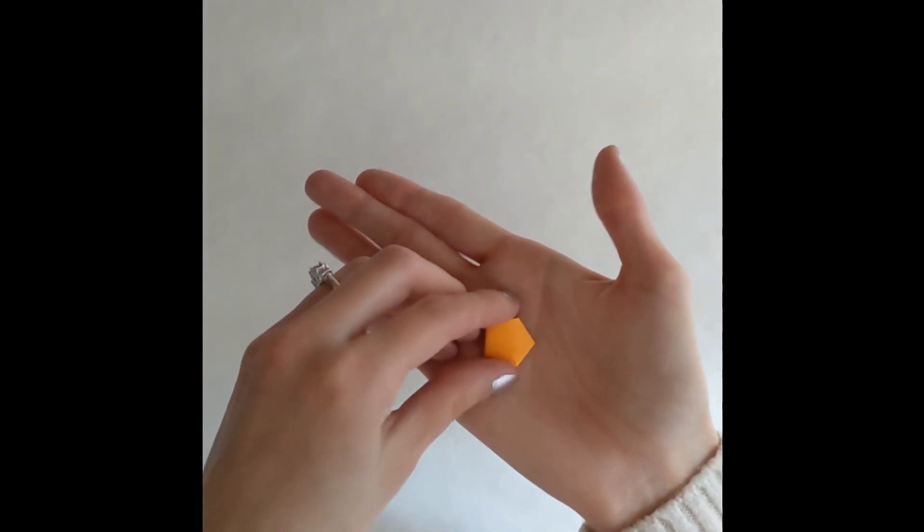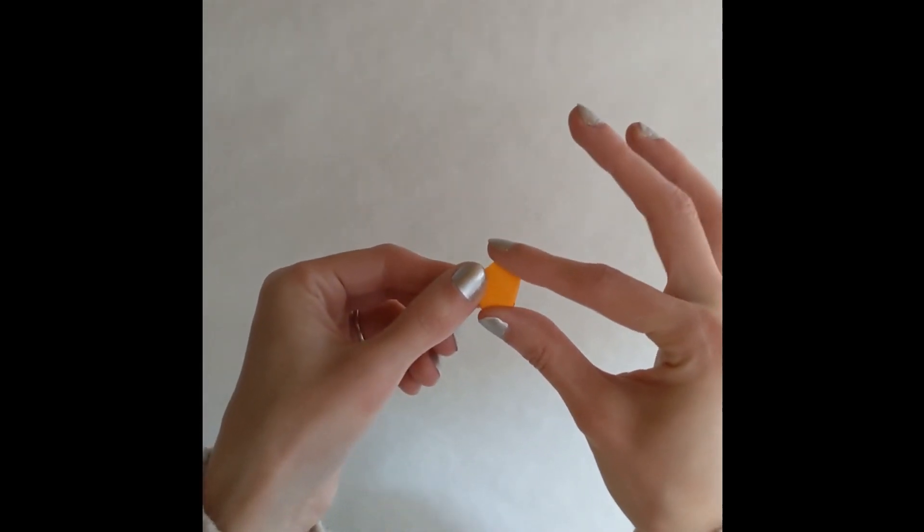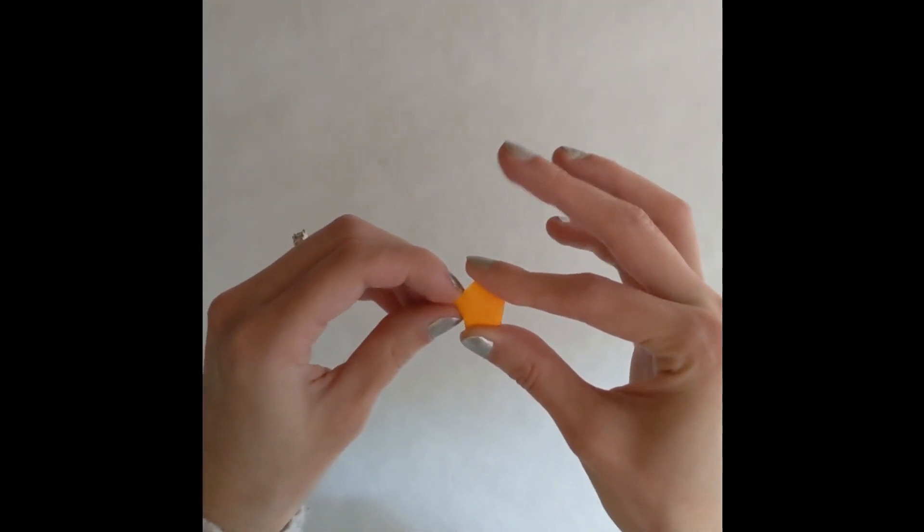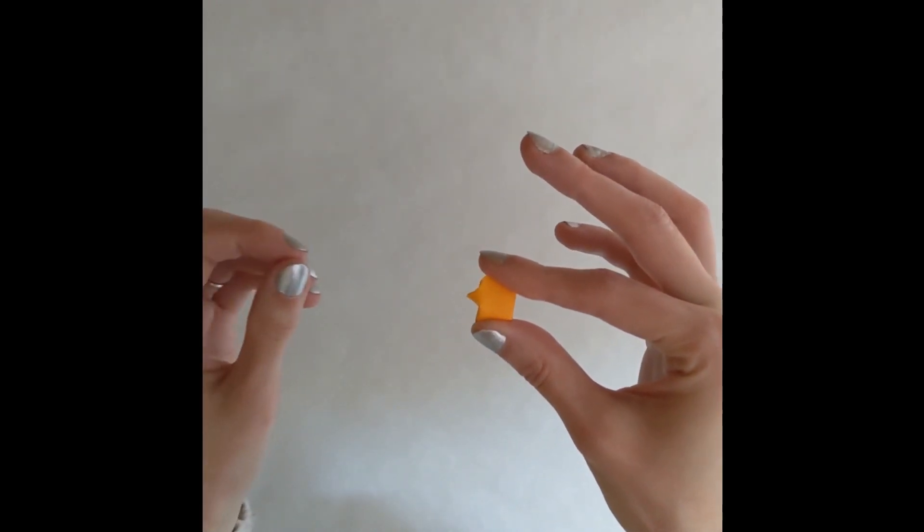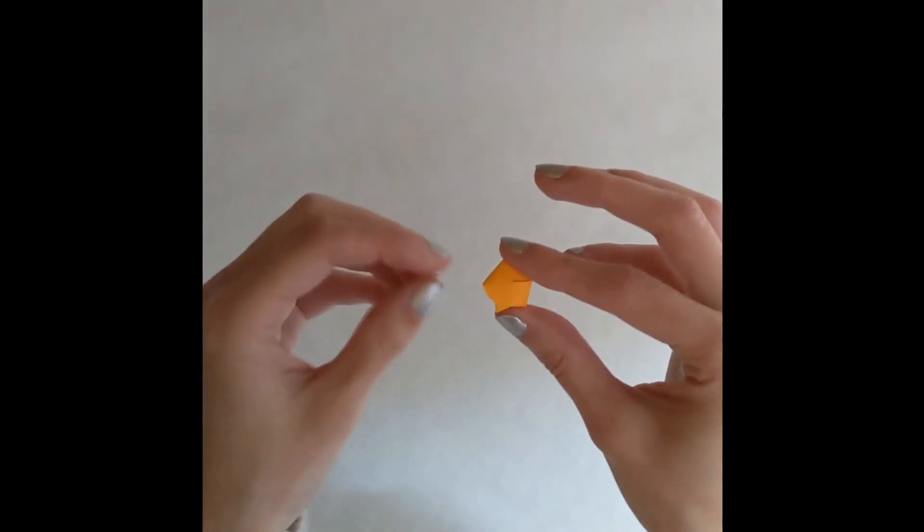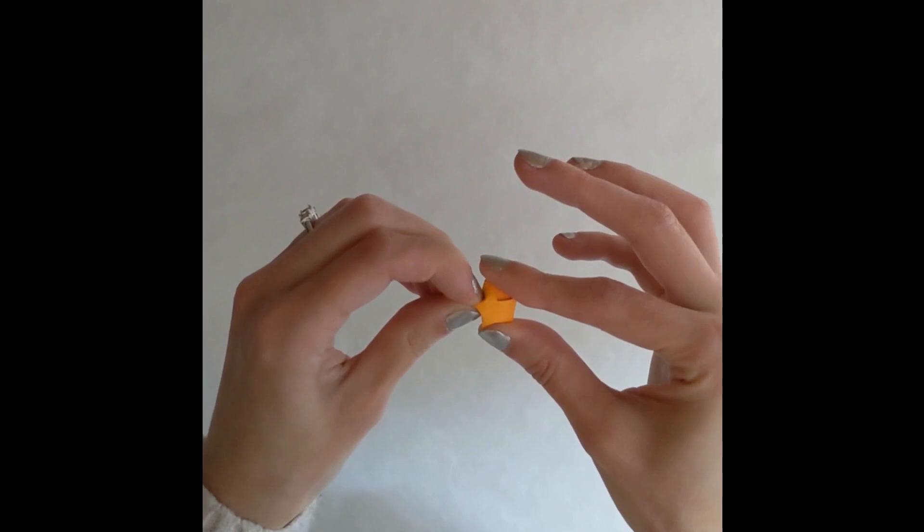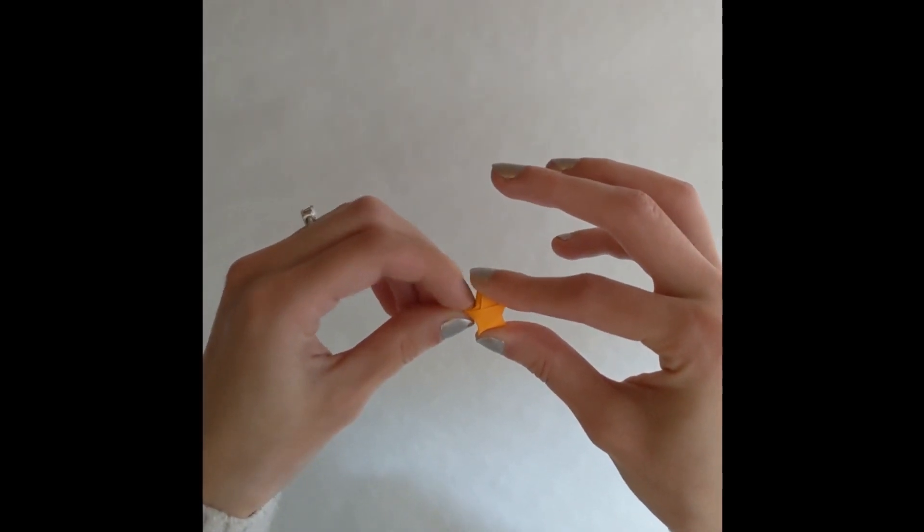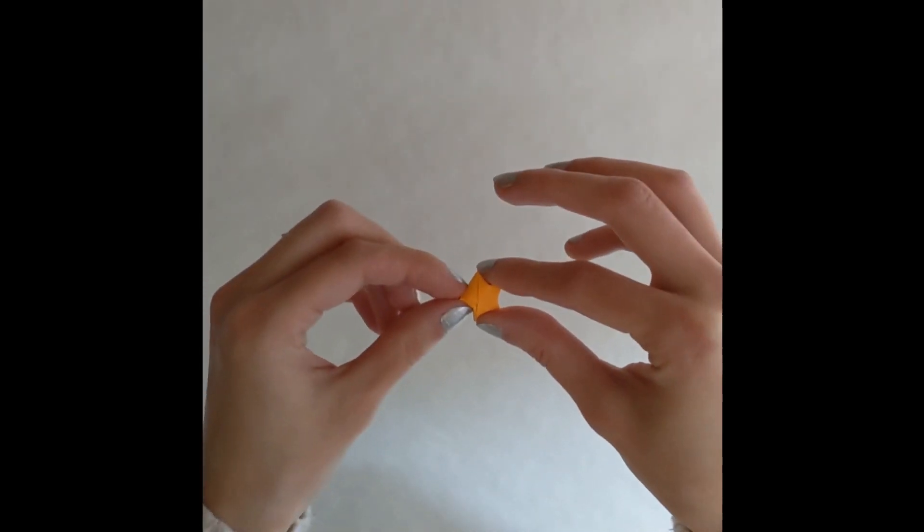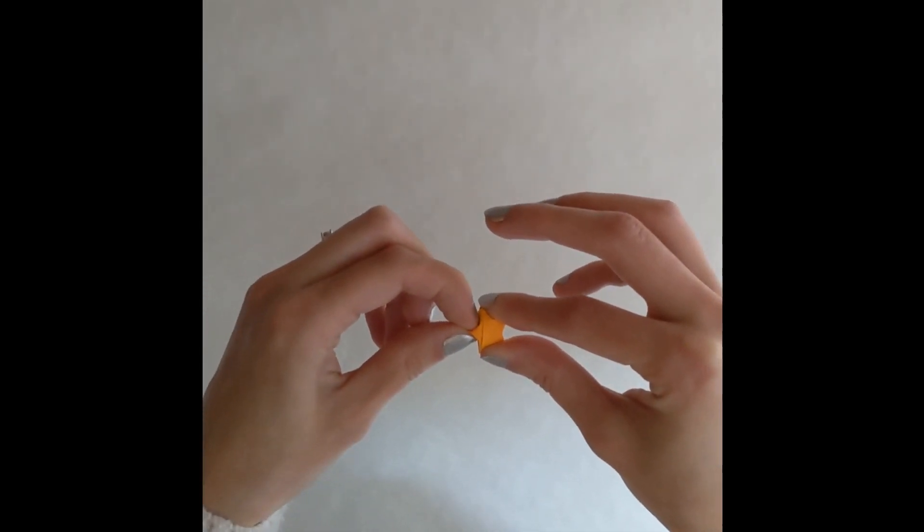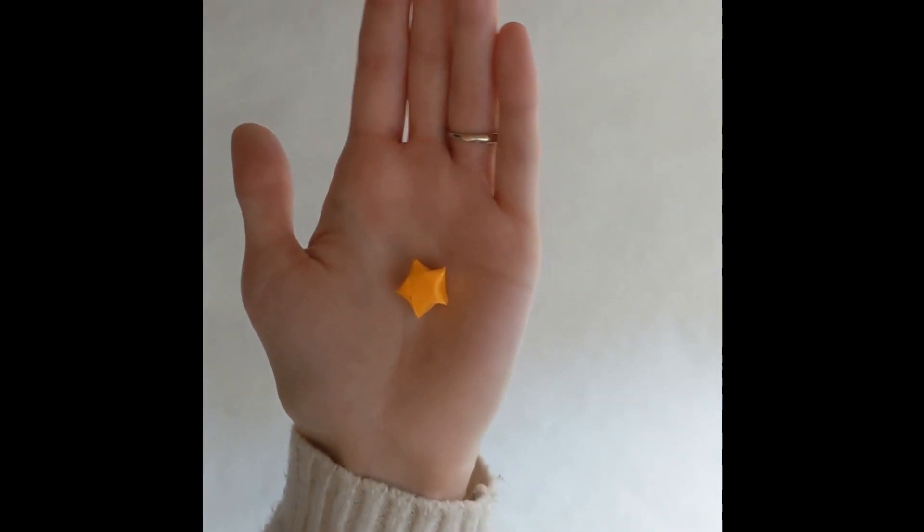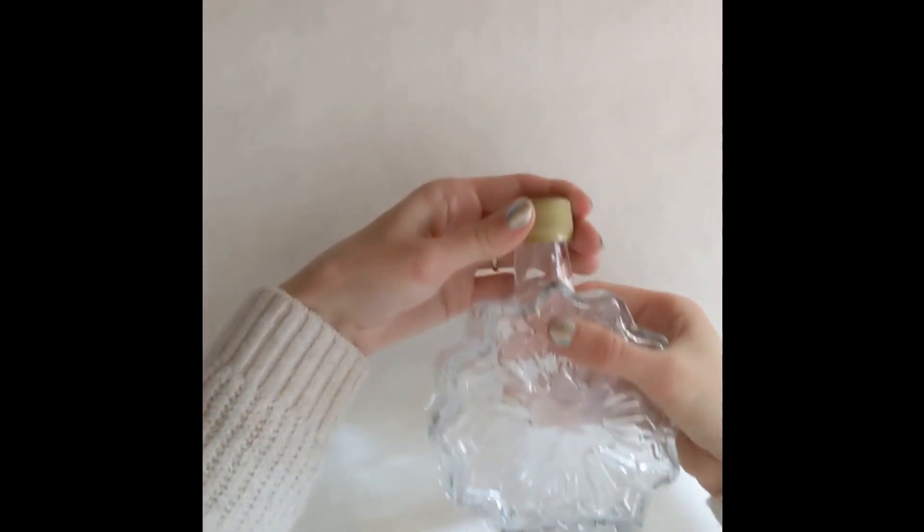Take your pentagon and hold it with two fingers along two of its flat edges. With your other hand, you'll want to pinch the middle of the other flat edges like so. Continue this process until you have pinched the middle of all five edges. And there you have it, an origami star! Making the perfect star can take some practice, so don't worry if you didn't get it right the first time.